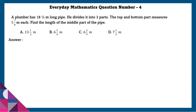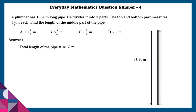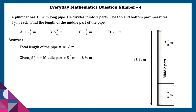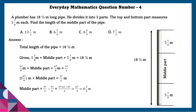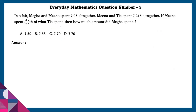Question 4: A plumber has 18 and 1/2 meter long pipe. He divides it into three parts. The top part and the bottom part measure 5 and 7/8 meters each. Find the length of the middle part of the pipe. The total length of the pipe is 18 and 1/2 meters. The bottom and top parts measure 5 and 7/8 meters each. To find the middle part, we subtract the top and bottom parts from the total. The middle part is equal to 6 and 3/4 meters.